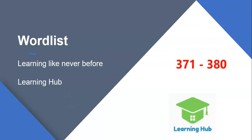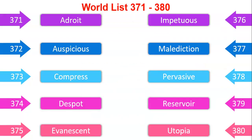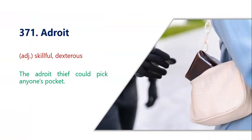Hello and welcome to wordlist 38. In this wordlist there are 10 words and today we are going to learn about these 10 words. These words are adroit, auspicious, compress, despot, evanescent, impetuous, malediction, pervasive, reservoir, utopia. The first word is adroit, which means skillful.